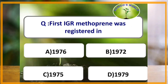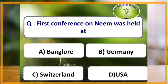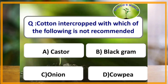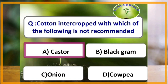Concept of economic threshold level and economic injury level was given by Stern. First insect growth regulator, Methoprene, was registered in the year 1975. First conference on neem was held at Germany. Indian Insect Pests was written by M. Lefroy. Cotton intercropped with which of the following crop is not recommended? The answer is castor.